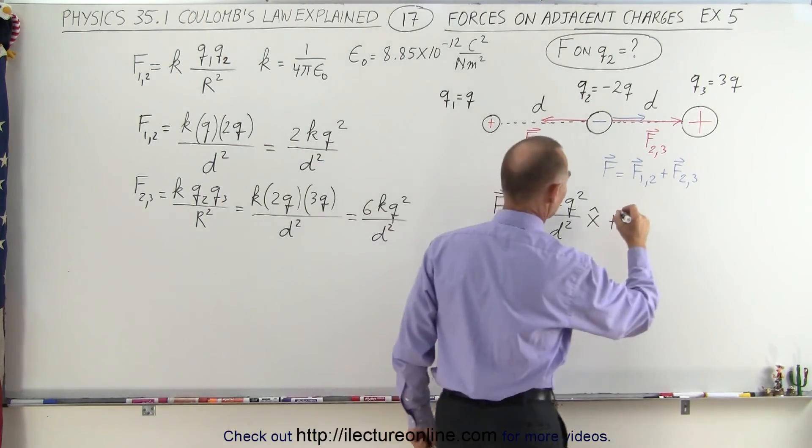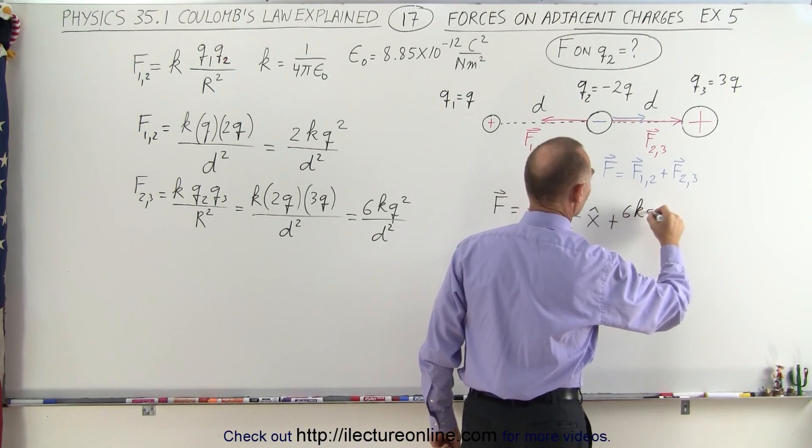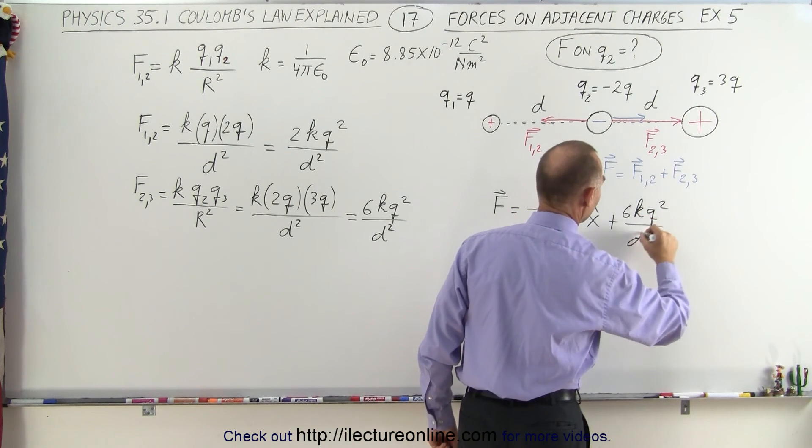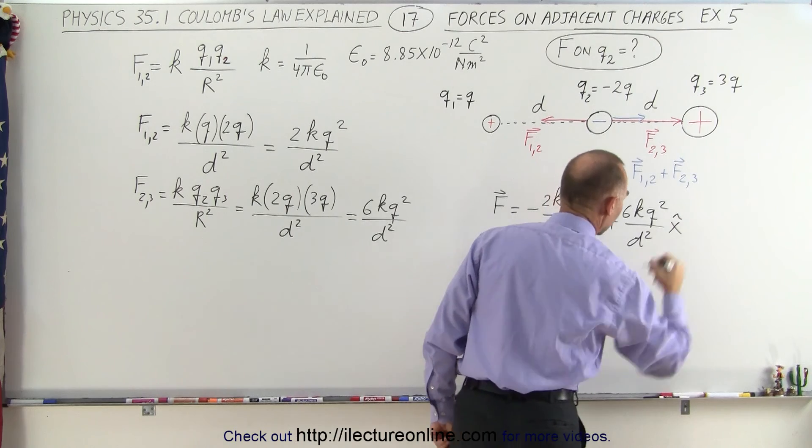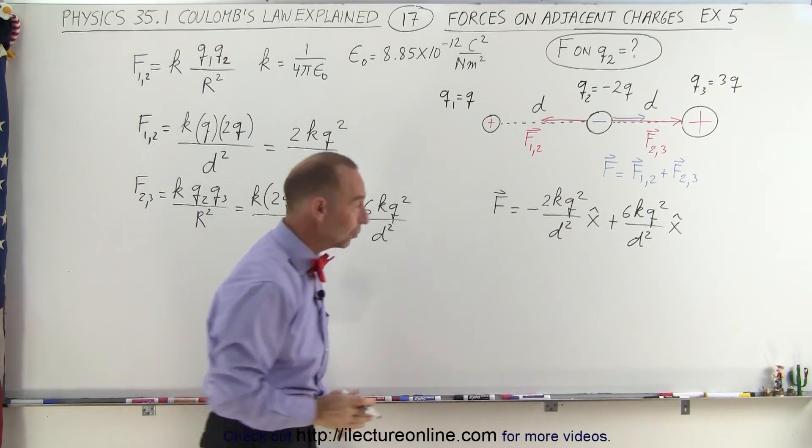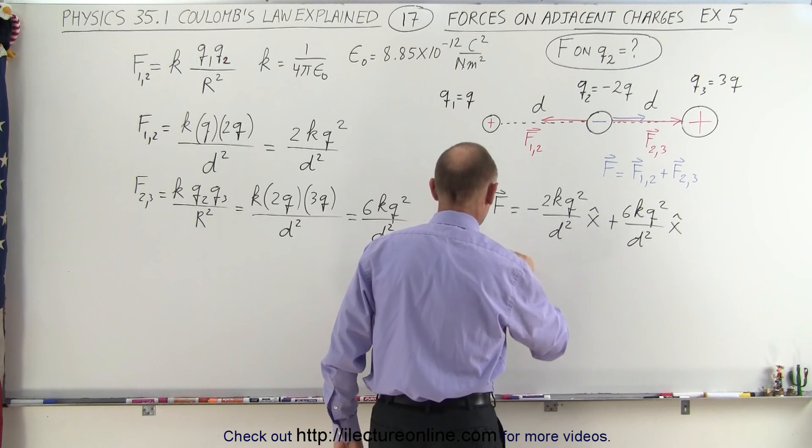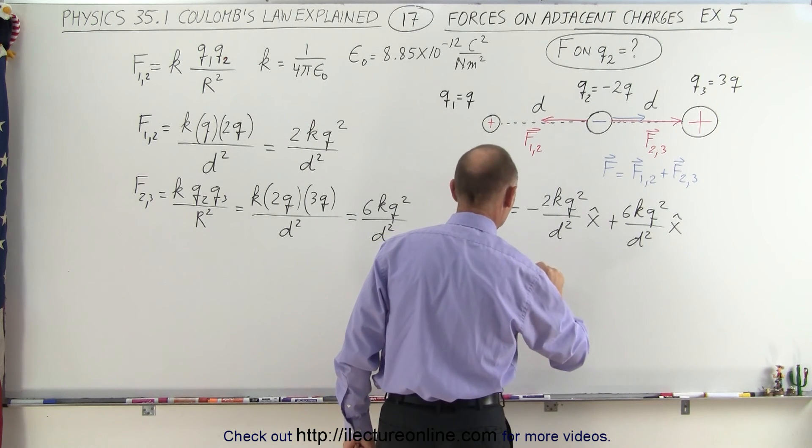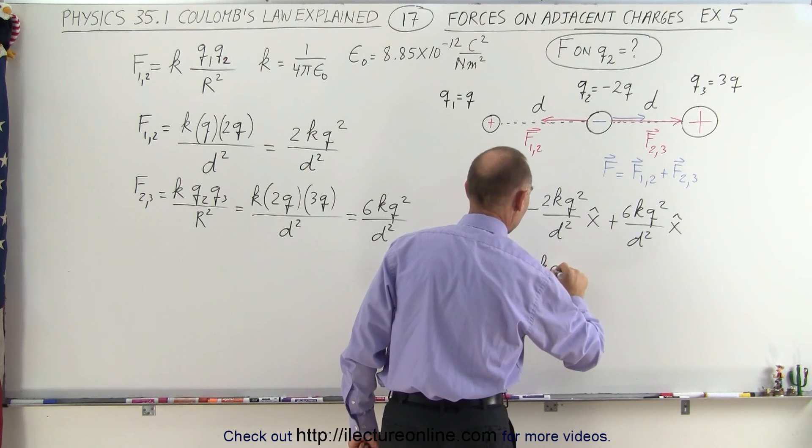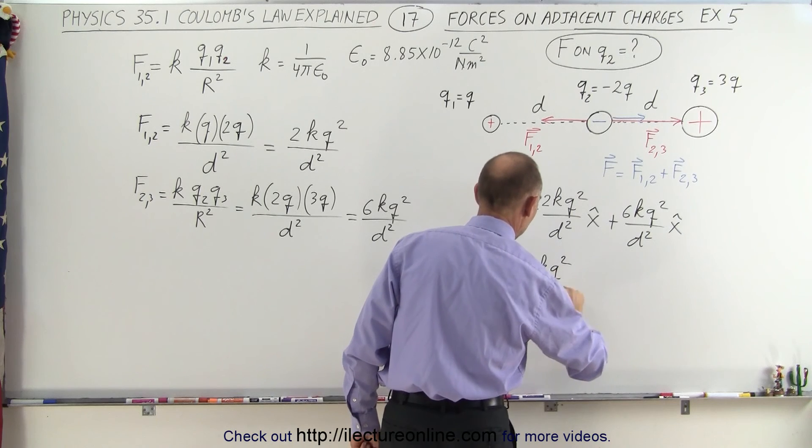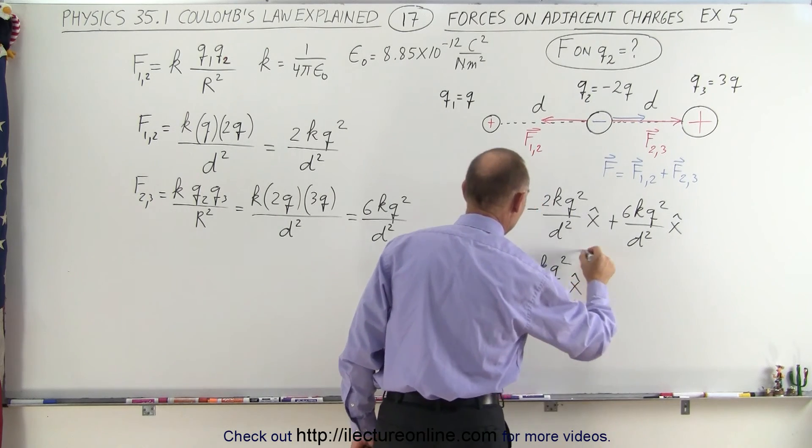the magnitude 6KQ squared divided by D squared in the positive x direction. When we vectorially add those two together, we get the total force is equal to positive 4KQ squared divided by D squared in the x direction.